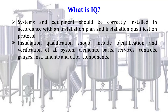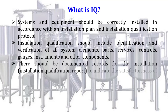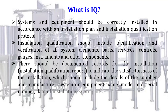Installation qualification should include identification and verification of all the system elements, parts, services, controls, gadgets, instruments and other components. There should be documented records for the installation qualification report to indicate the satisfactoriness of the installation, which should include the details of the supplier and manufacturer, system or equipment name, model and serial number, and date of installation.